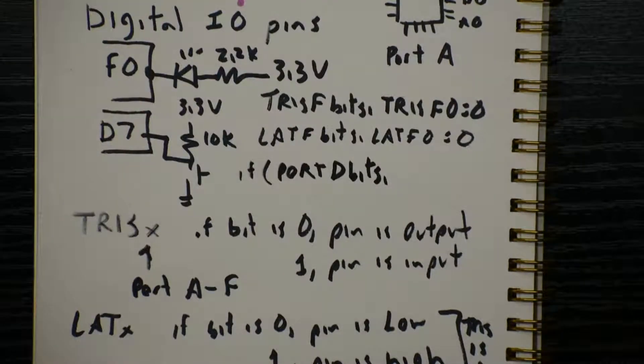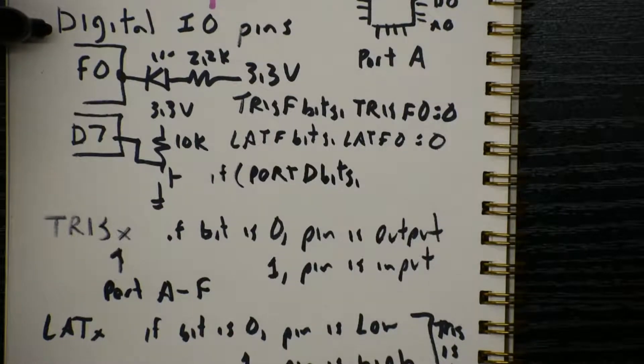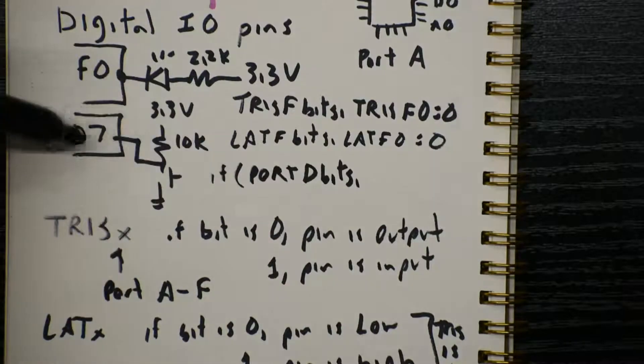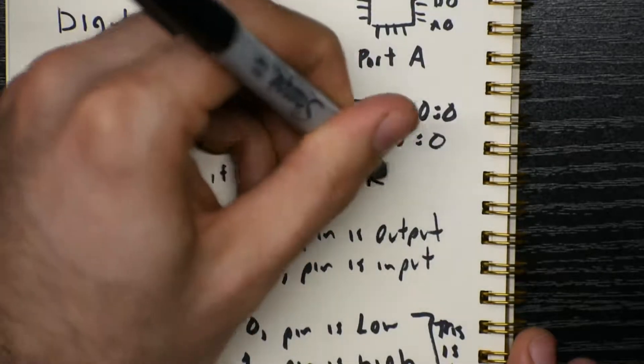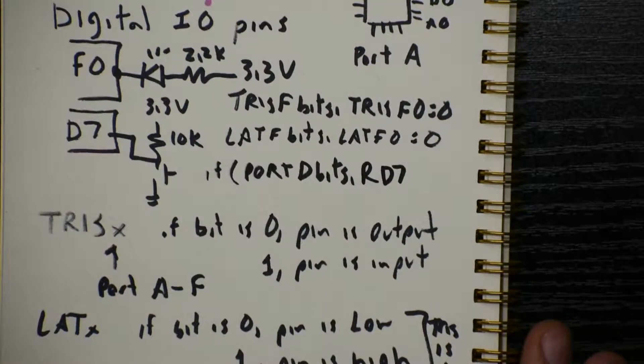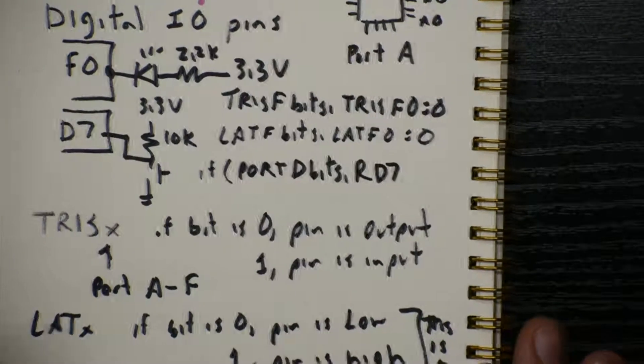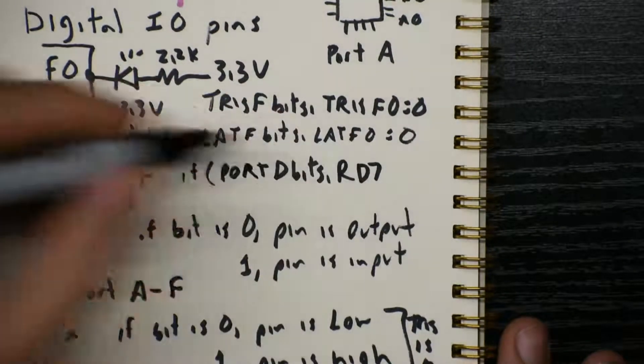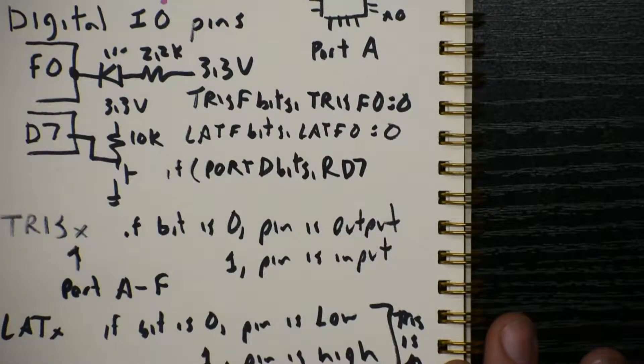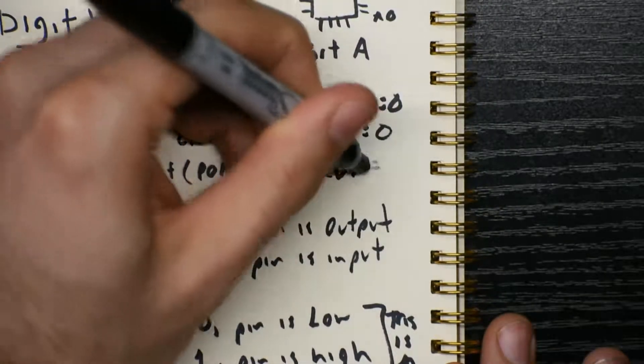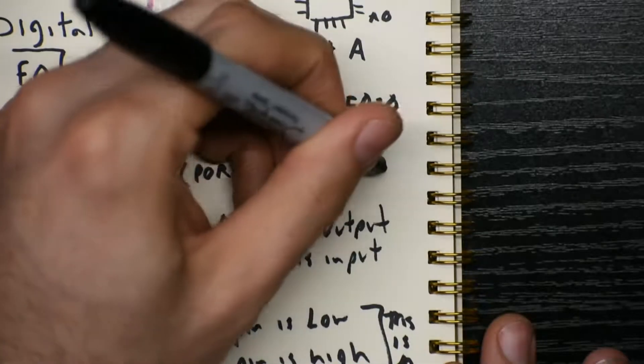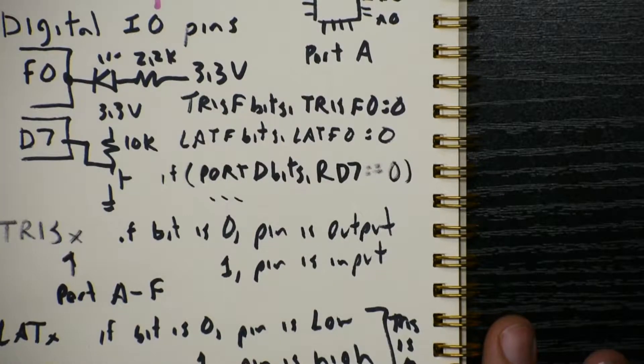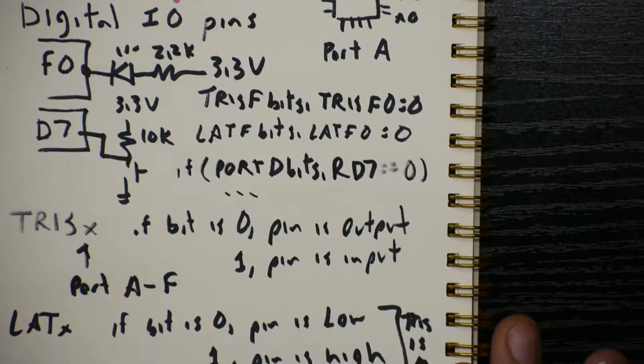For the input pin, let's figure out is the pin high or low. That's the port register. Port X. So if a bit is 0, the pin is low. Not because we're making it low, but because the external circuit is making it low. If the bit is a 1, the pin is high. So we could say if port D bits. Now somebody in Microchip, when they wrote the H file for this PIC32, and all the PIC32s, decided to break their naming convention here. So instead of saying port D bits dot port D7, they decided to call this R D7.